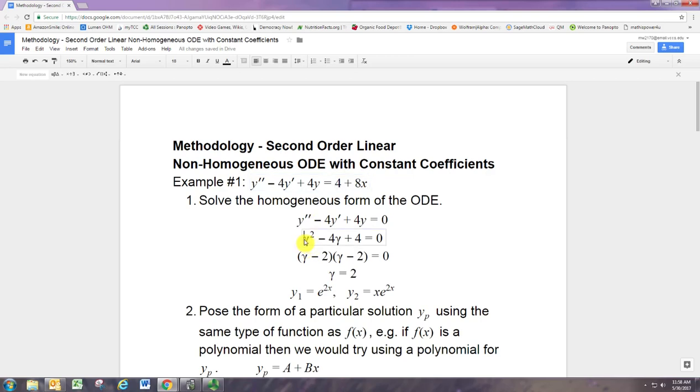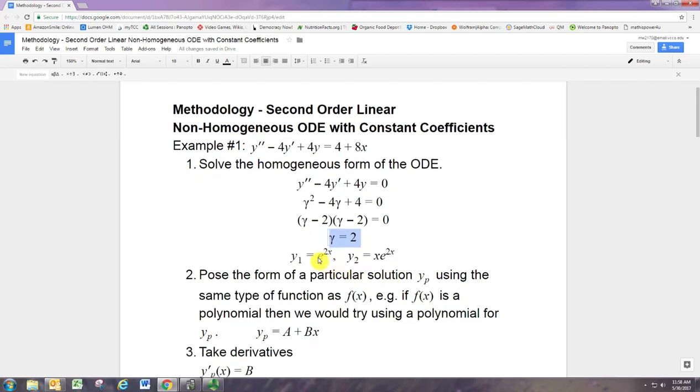We substitute that in, we get the characteristic equation, that's a quadratic equation for gamma. You solve that, and you get either two numbers for gamma or one. And remember in the case when you get one real solution, that you use e to the gamma x as one of those, and x e to the gamma x as the other solution. So that was the second case in the last methodology. So that gets you the fundamental solution set for the homogeneous form.